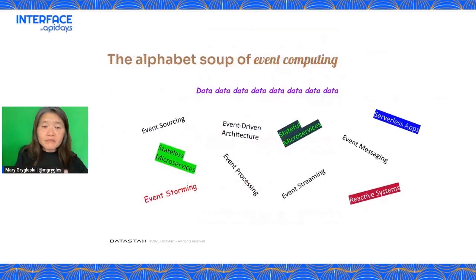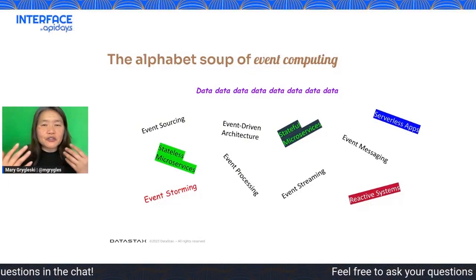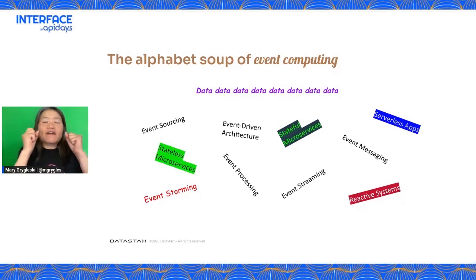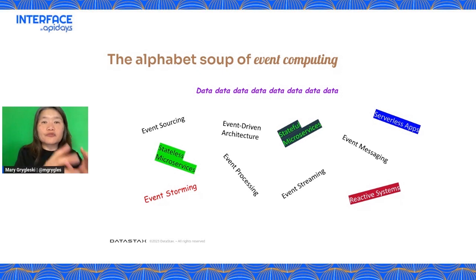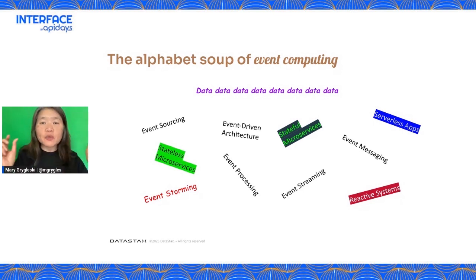Let me clarify different terminologies: event streaming, event messaging, event processing, event sourcing, event storming, and event-driven architecture — they can mean different things to different people. Every event carries with it data that can be very crucial. We need a system that can guarantee delivery of all these messages from one point to another. Event messaging is the more primitive sense: taking care of data traveling from point A to point B.